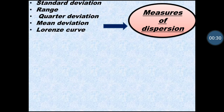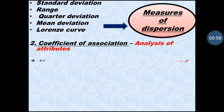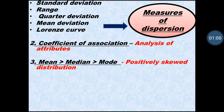In fill-in-the-blank or MCQs, they can ask you about measures of dispersion. There are five measures of dispersion: standard deviation, range, quartile deviation, mean deviation, and Lorenz curve. In match-the-following, if measures of dispersion are given and any of these points appear, you can match the correct answer.